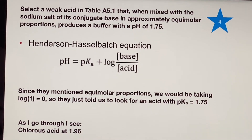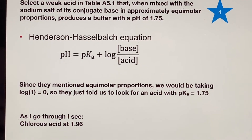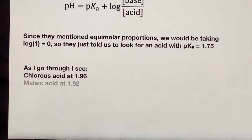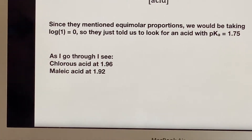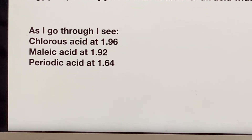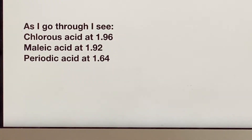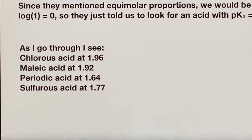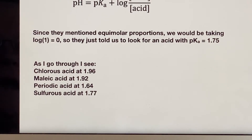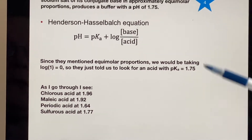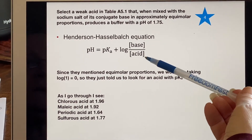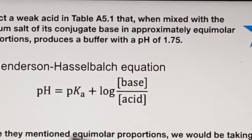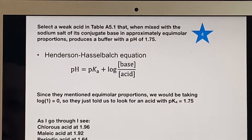Going through the table, I see chlorous acid at pKa 1.96 — that's close, but I can probably do better. Maleic acid is at 1.92, a little closer. Then on the other side, periodic acid is closer still. And there it is — sulfurous acid. Out of the ones I found, sulfurous acid is the closest to 1.75. So there would not be much difference between the molarities of acid and base, which meets the criteria of approximately equimolar proportions.